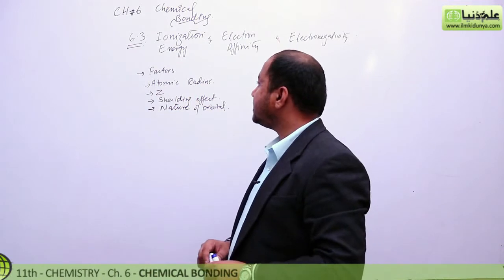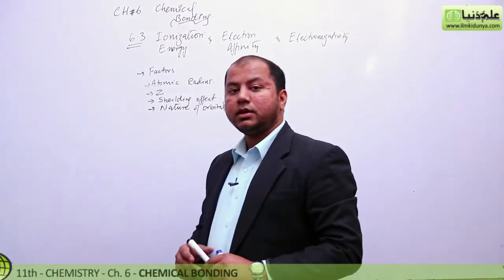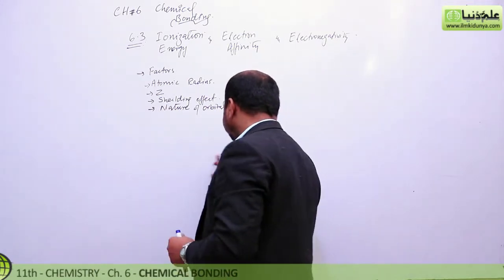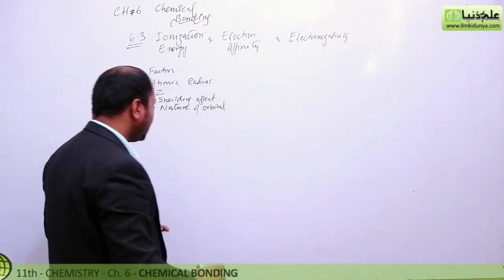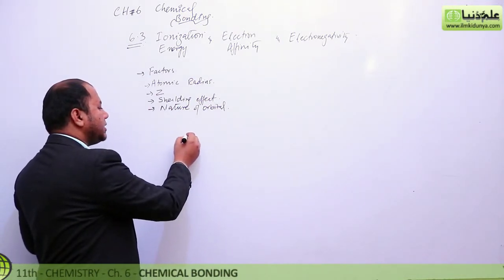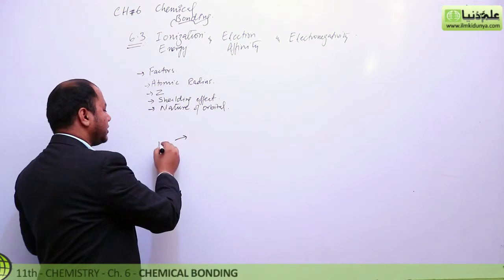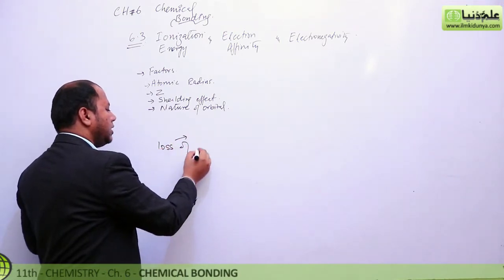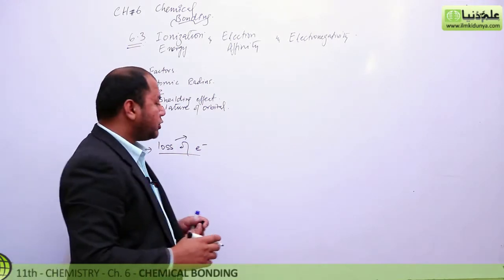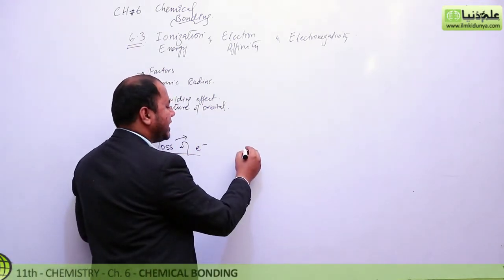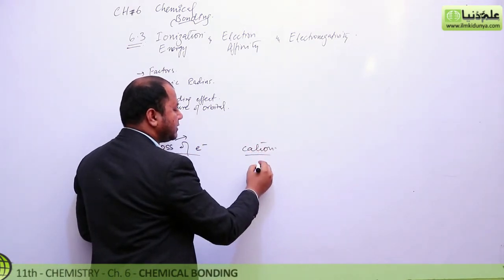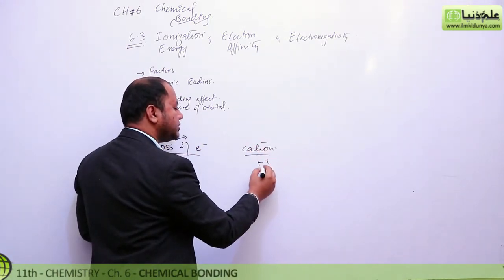If we think about ionization energy — 'ionization' means the formation of an ion. It is concerned with the loss of an electron. You must remember one thing in your mind: ionization always produces a cation. A cation is the positively charged species.